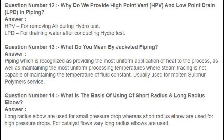Question number 14: What is the basis for using short radius and long radius elbows? Answer: Long radius elbows are used for small pressure drops whereas short radius elbows are used for high pressure drops. For catalyst flows, very long radius elbows are used.